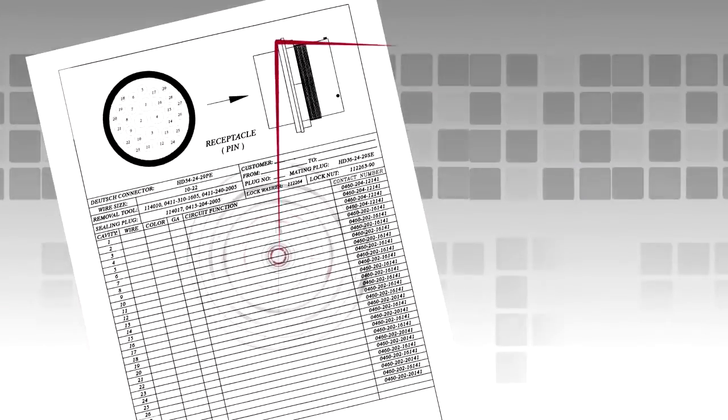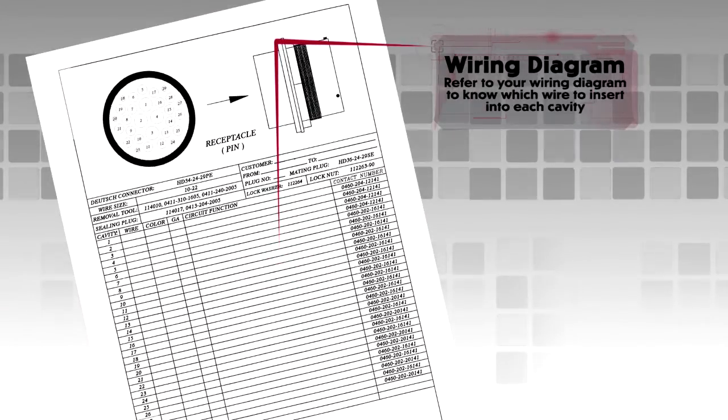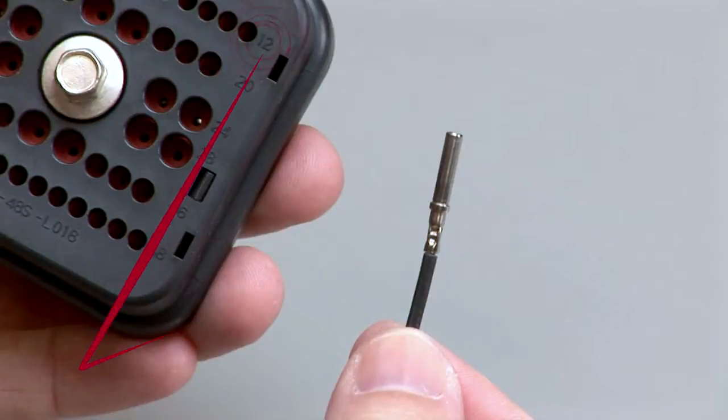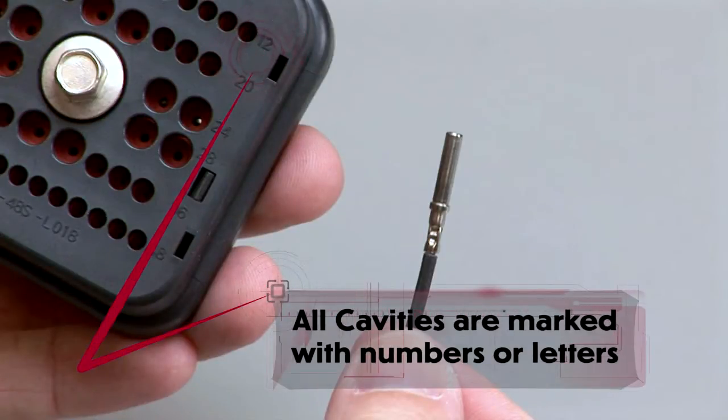Refer to your wiring diagram to know which wire to insert into each cavity. All cavities are marked with numbers or letters, depending on the design.